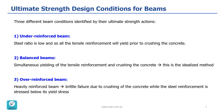Now let's look at the first condition, which is under-reinforced beam. In this case, the steel ratio is low and so the tensile reinforcement will yield prior to crushing of the concrete. In this case, the beam will behave in a ductile manner, and the reason for that is once the steel has yielded, it continues to elongate rapidly.